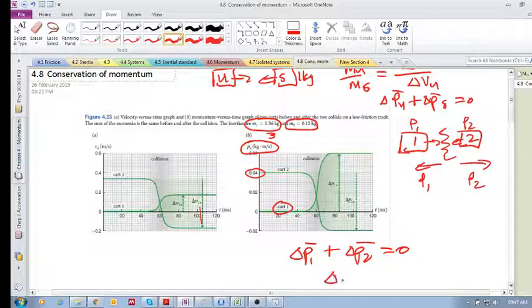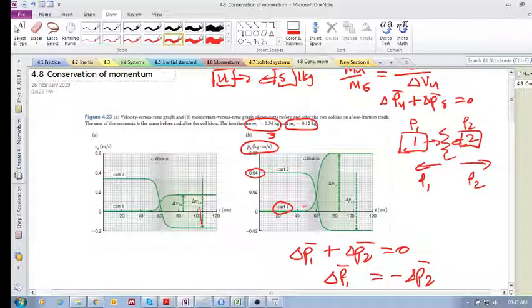So delta P1 is the negative of delta P2. So there has been momentum transfer to each cart individually, no doubt about it, but as a system, the amount of momentum that was changed for cart 1 is the negative of cart 2.